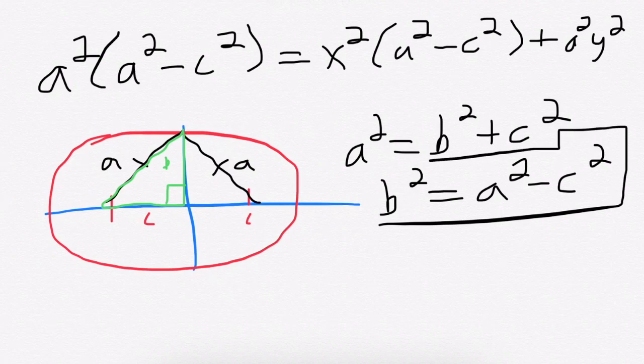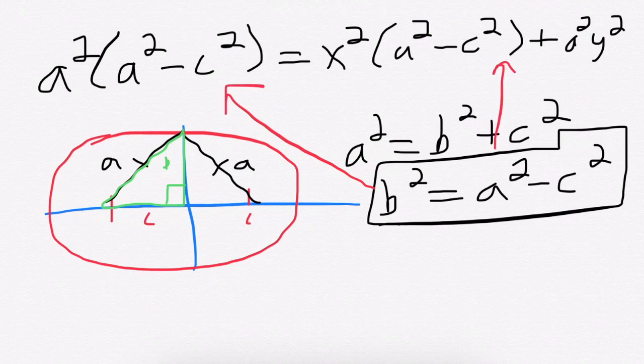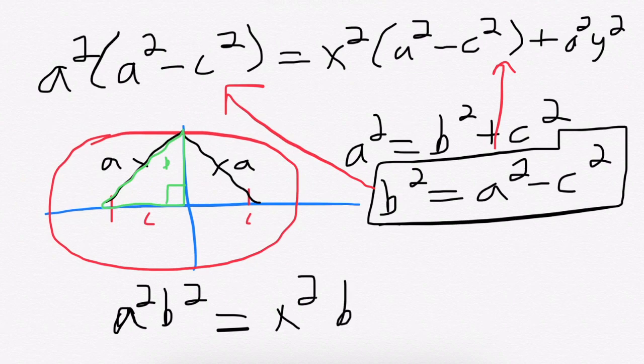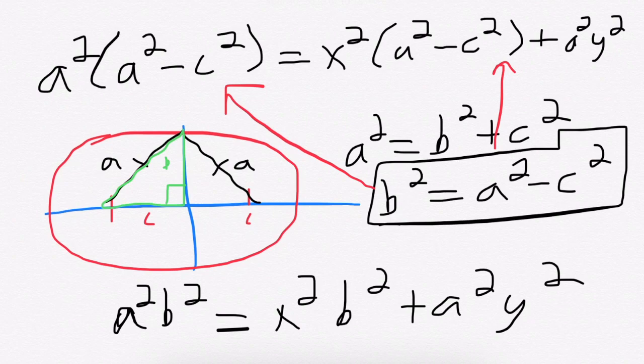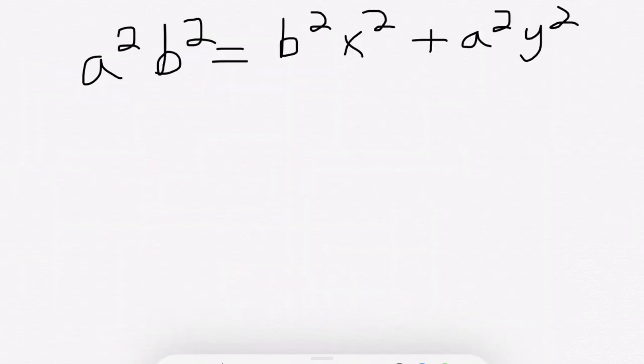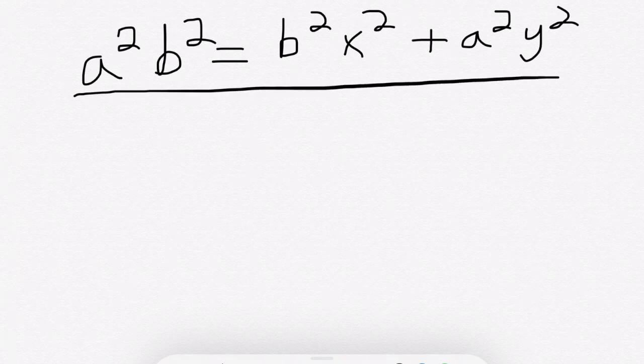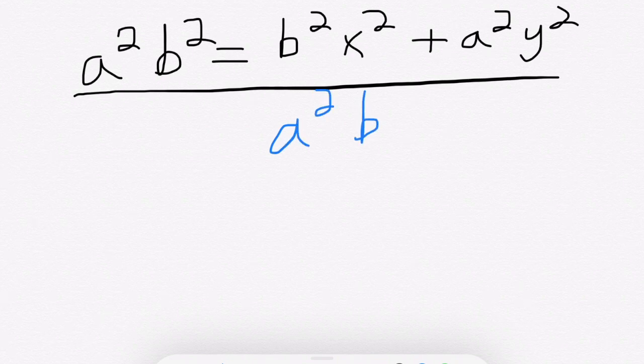This is going to help simplify our equation a little bit, because we can substitute that in both places into our equation. So what we have is a squared b squared equals x squared b squared plus a squared y squared.